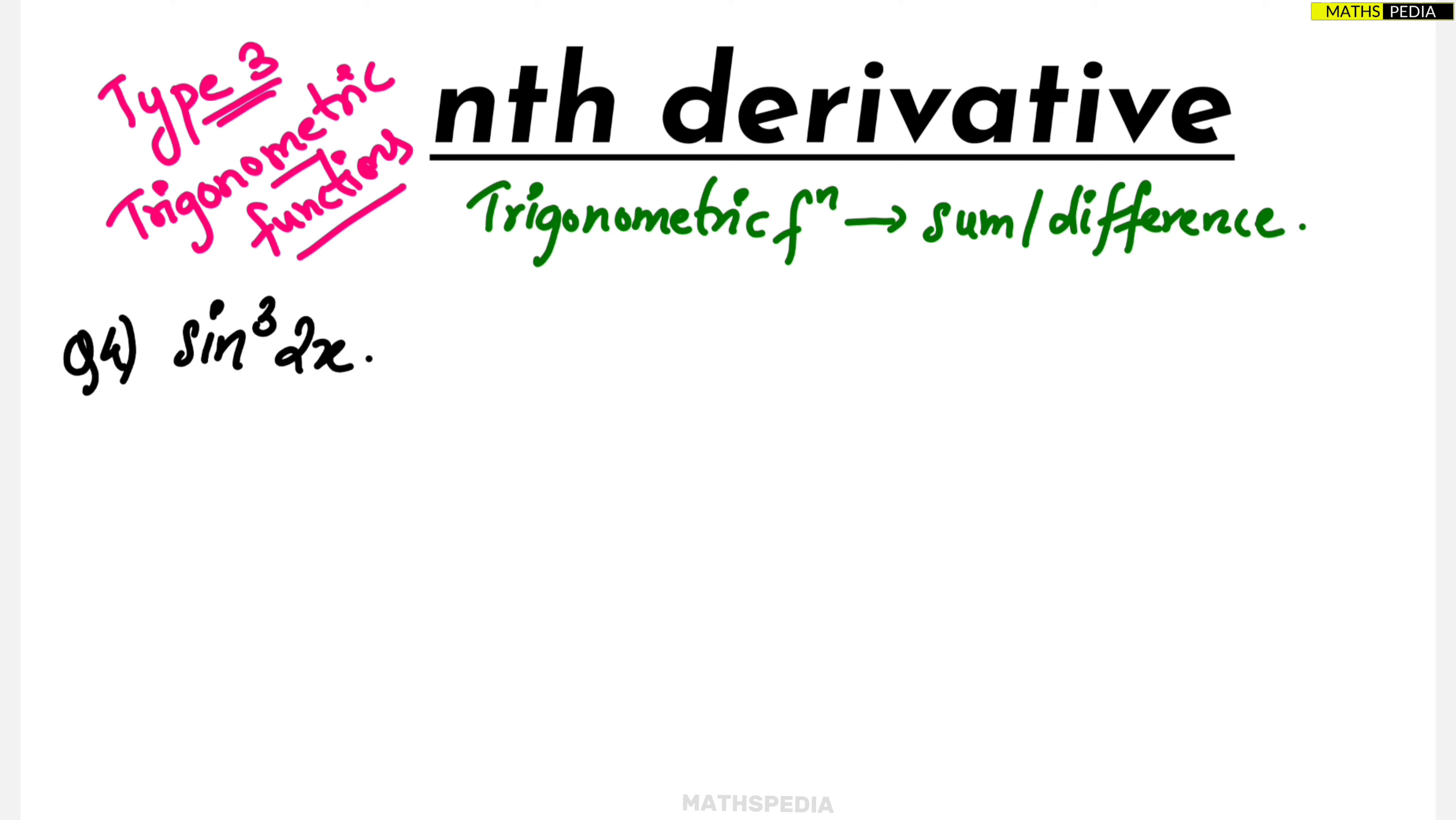Because there only we can get some form of difference. Here we have sine cube 3x, so we have to see for sine 3x. The formula for sine 3x or sine 3 theta is equal to 3 sine x minus 4 sine cube x.